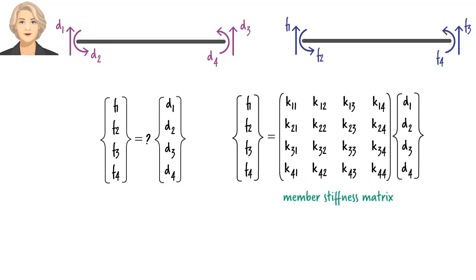We use number subscripts to label the individual coefficients. For example, K11 is the stiffness coefficient associated with pair F1, D1. K12 is the coefficient for pair F1, D2, and so on.